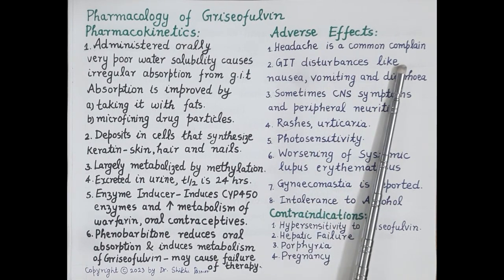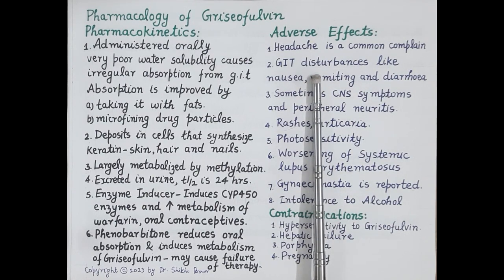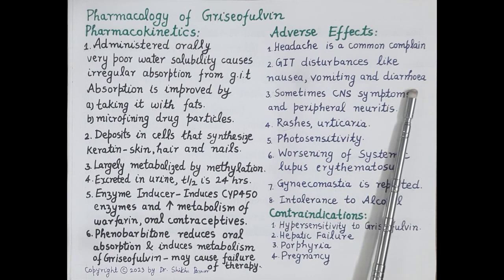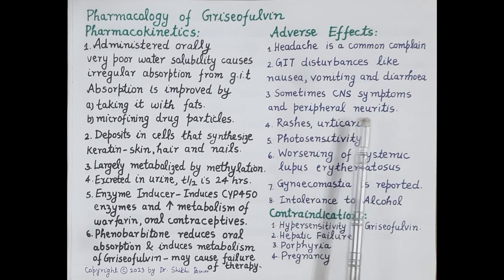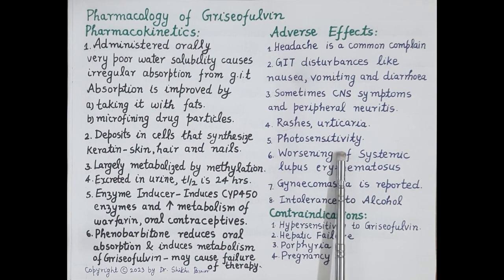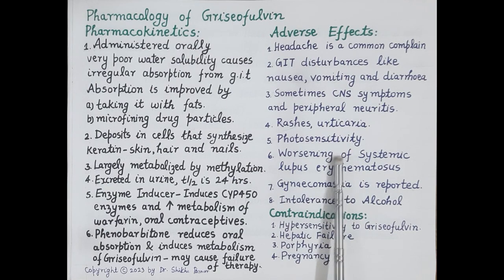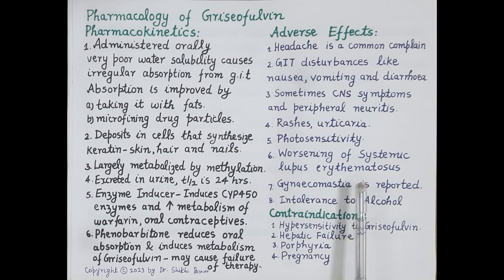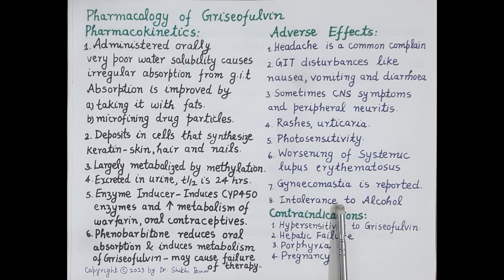Adverse effects of griseofulvin include: headache, which is a common complaint; gastrointestinal disturbances such as nausea, vomiting, and diarrhea; central nervous system symptoms and peripheral neuritis; rashes and urticaria. Griseofulvin can cause photosensitivity — even brief sun exposure may cause skin rashes, itching, redness, and sunburns. It can exacerbate systemic lupus erythematosus. Gynecomastia is also reported. Griseofulvin causes intolerance to alcohol, and may cause a disulfiram-like reaction.